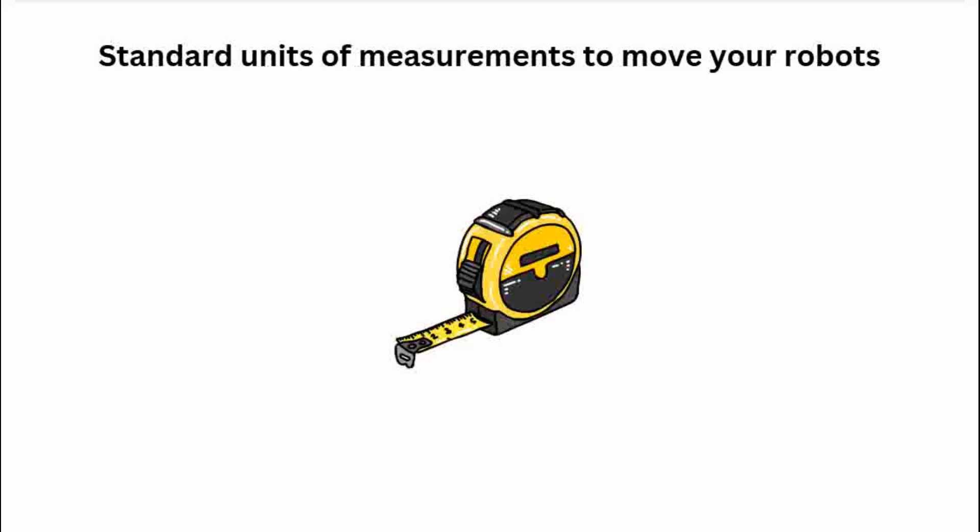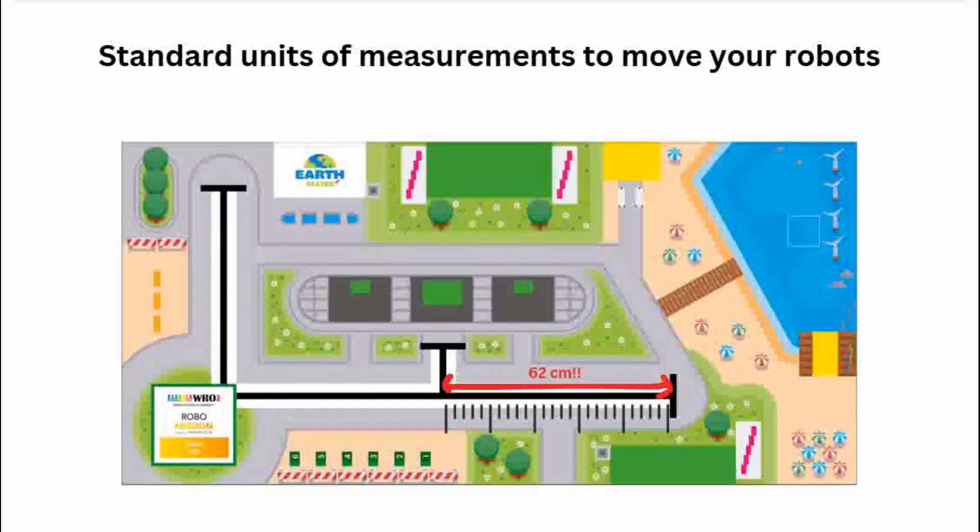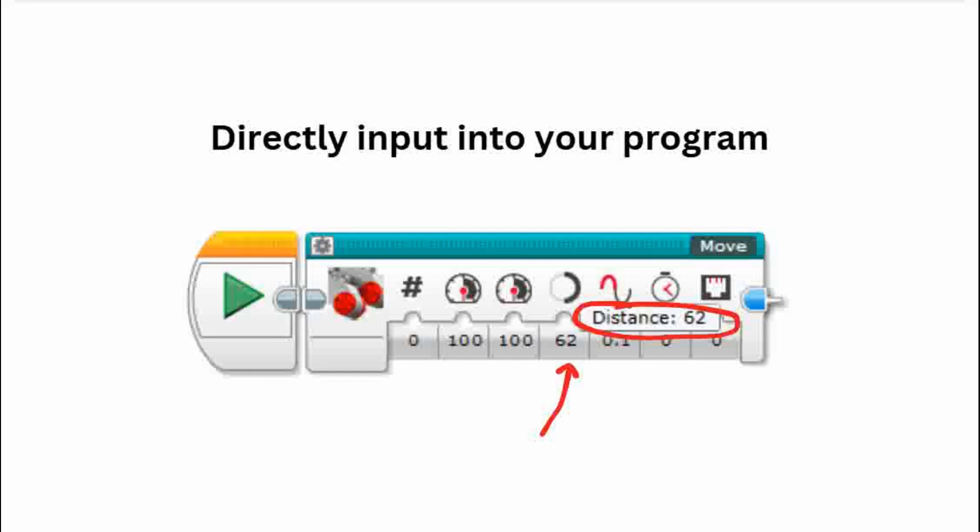Using standard unit of measurements to move your robots around is very beneficial to you because you can just measure the distance you need to travel with a measuring tape and directly input it into your program. And you're good to go! This method will be very helpful in surprise missions when the clock is constantly ticking and you don't have a lot of time for trial and error.